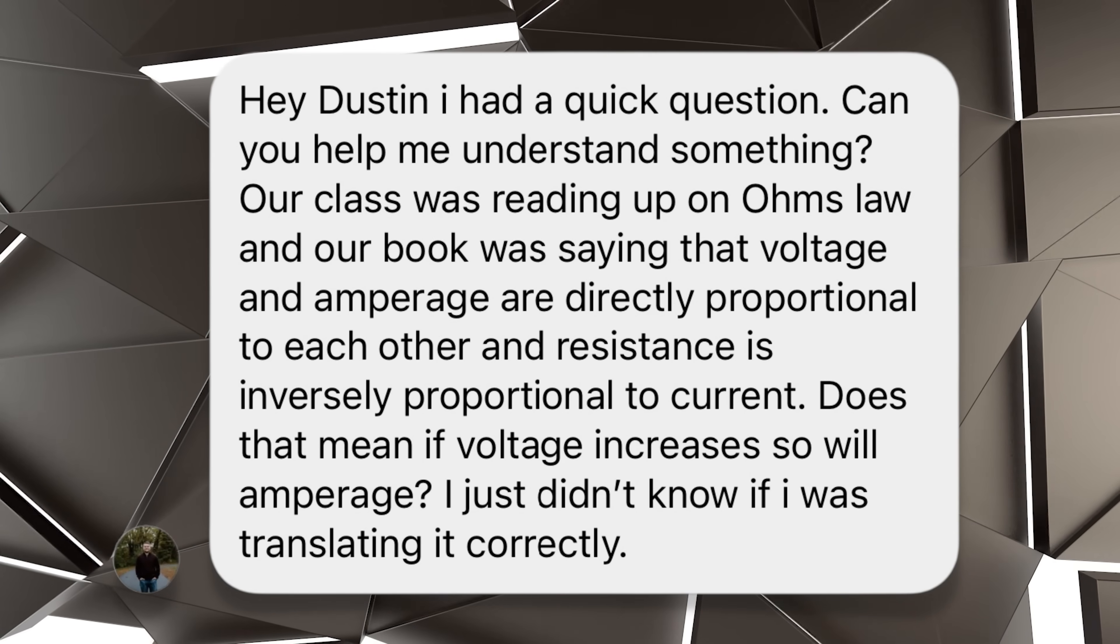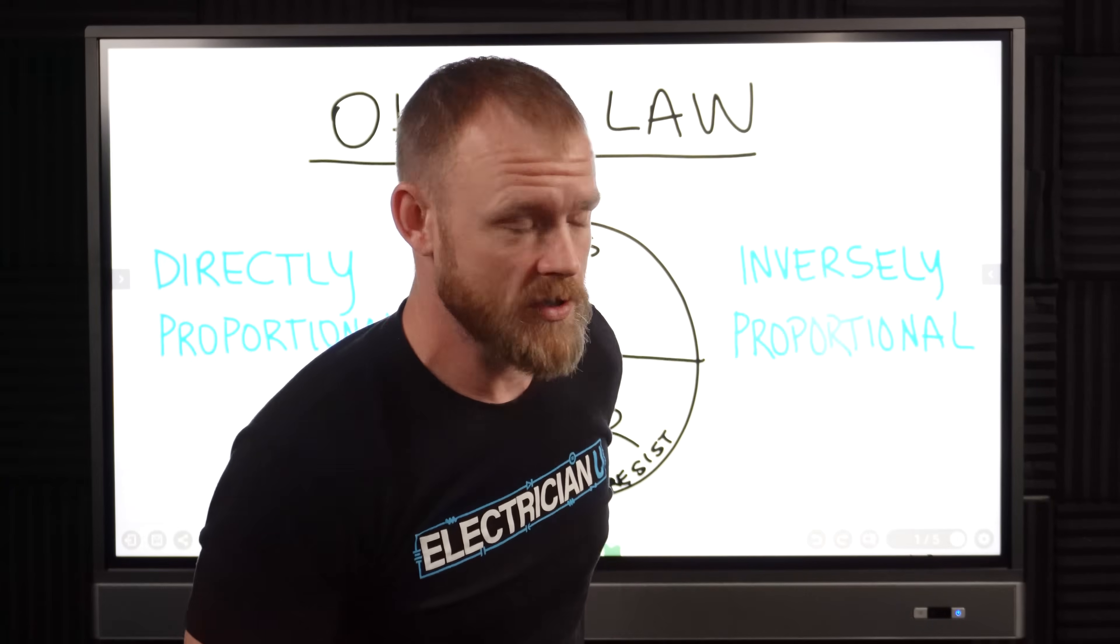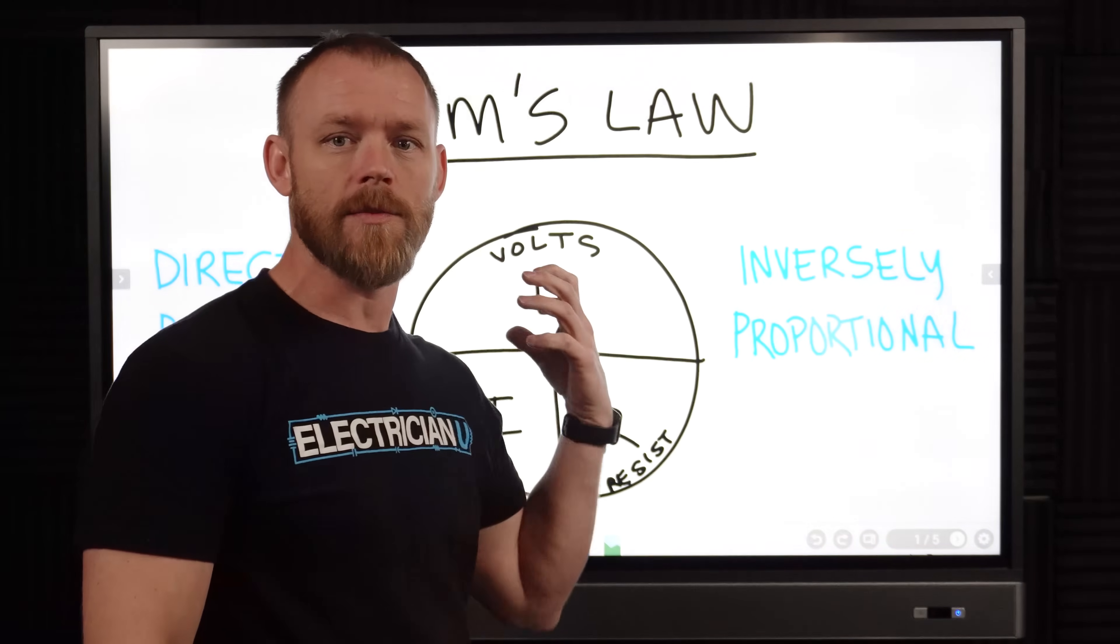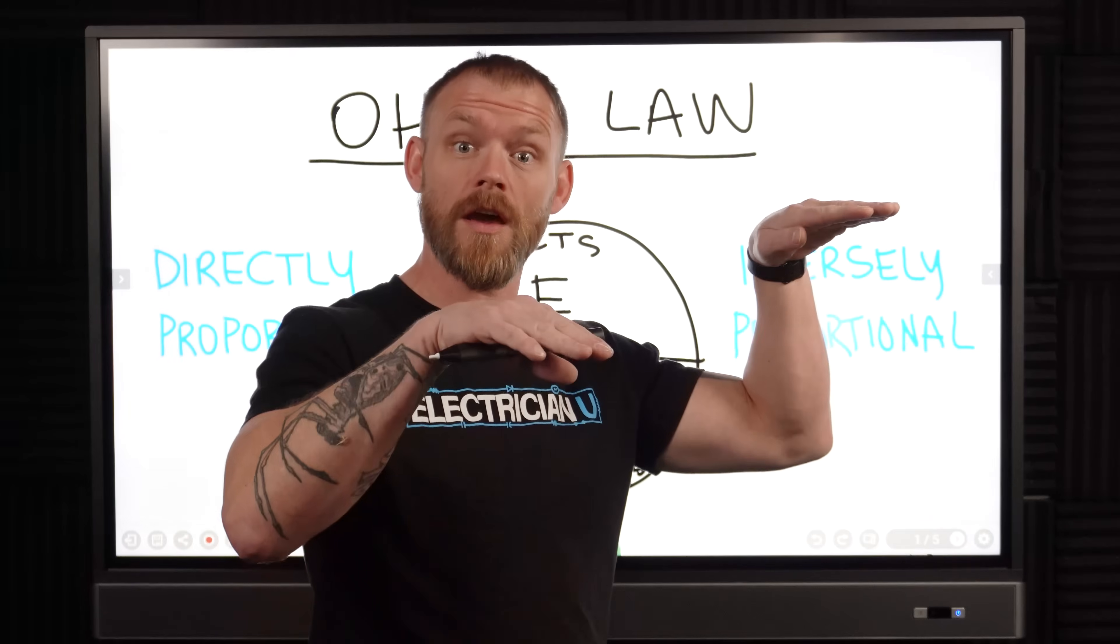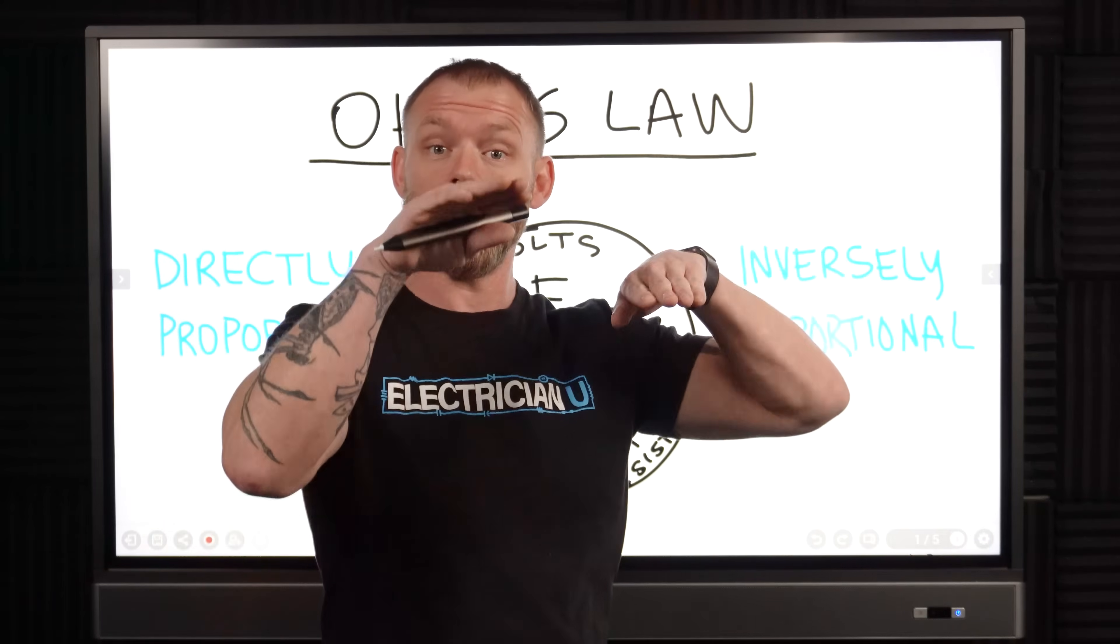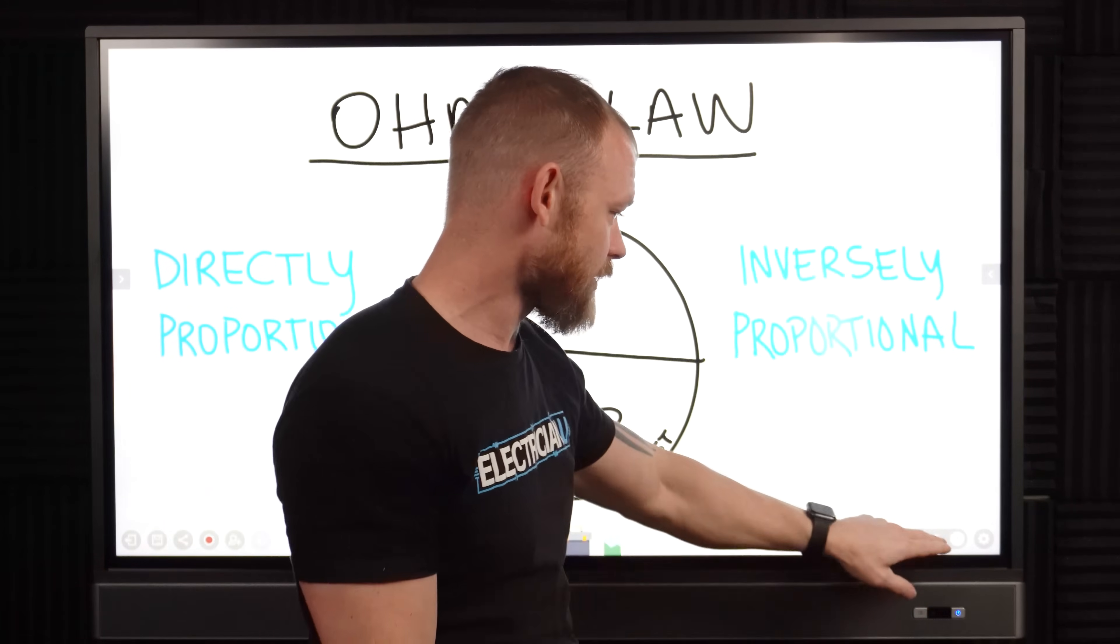That's a really good question. Directly proportional means if you raise one value the other one goes up directly with it. Inversely means if you raise one value the other one's going to go down, they're the inverse of each other. So let's look at that a little bit.